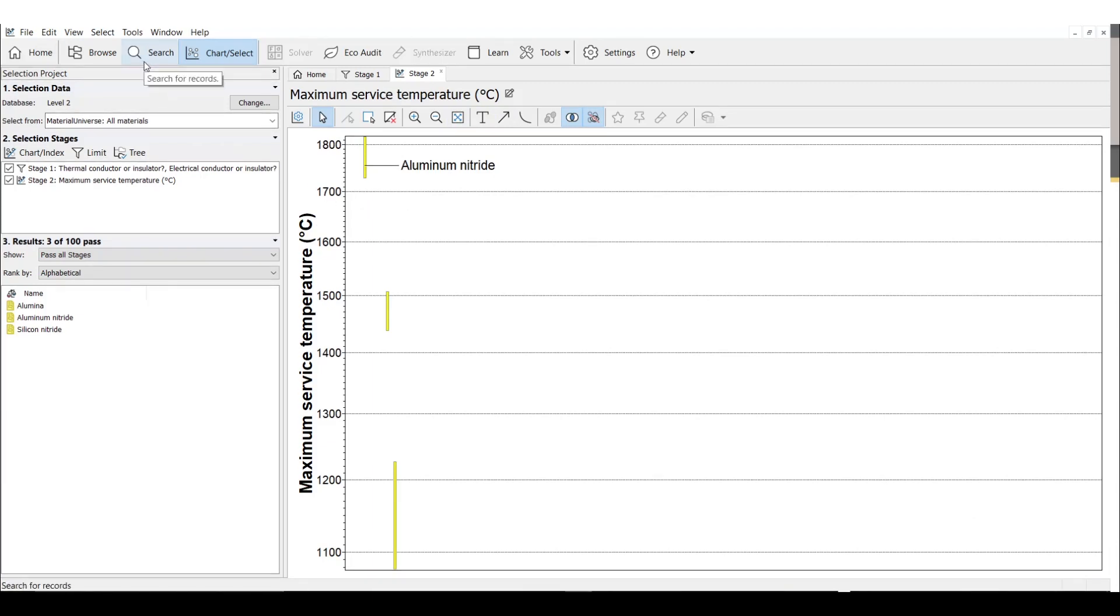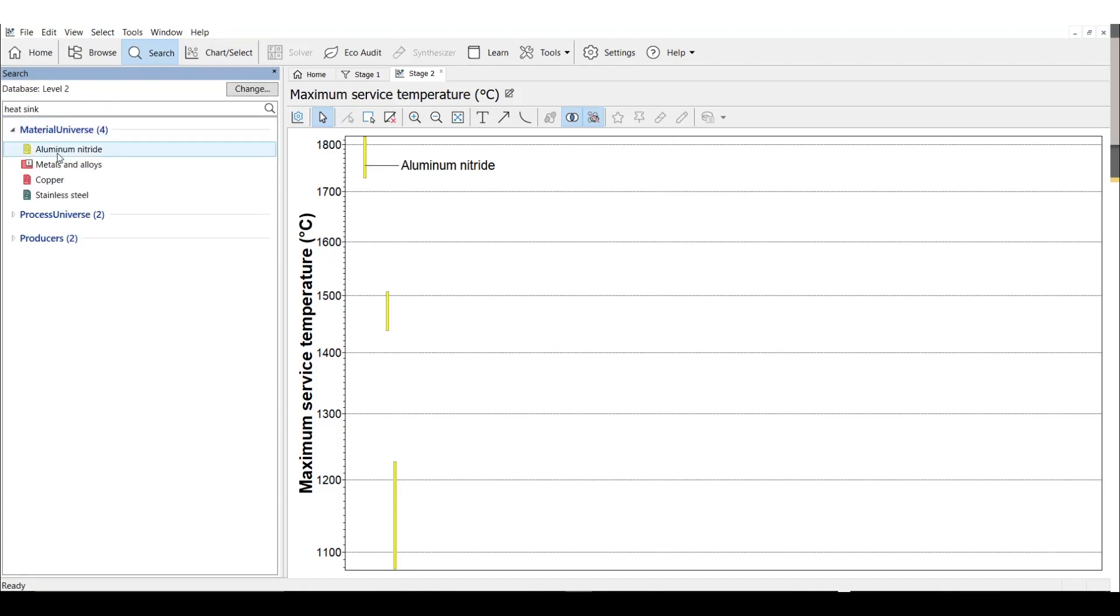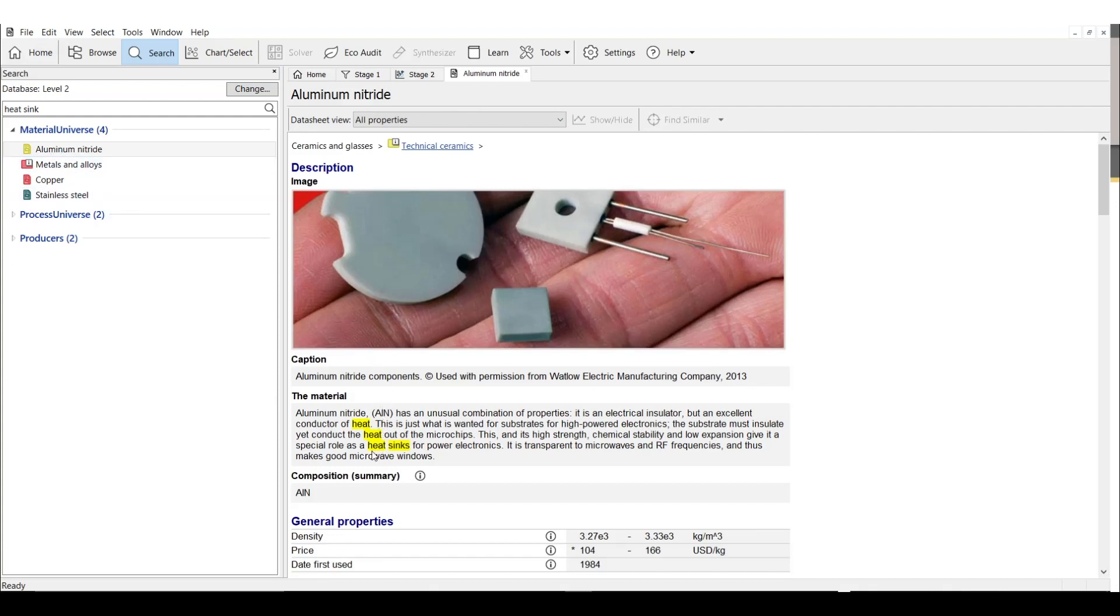Now, is this a good choice? Edupack has a search function, so let's see what comes up when I type in heat sink. The top material choice is aluminum nitride.